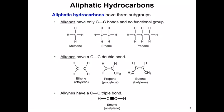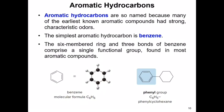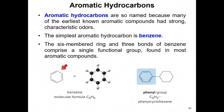The second classification of hydrocarbons is aromatic hydrocarbons. These contain a closed ring structure with alternating double bonds. Benzene is the simplest aromatic hydrocarbon and contains alternating double and single bonds. They were called aromatic because many of these hydrocarbons have a very strong scent or aroma. Aromatic compounds contain the functional group known as the phenyl group, also known as the benzyl group. The six-membered ring and three double bonds of benzene comprise a single functional group found in most aromatic compounds.